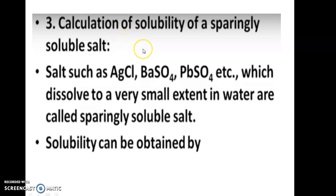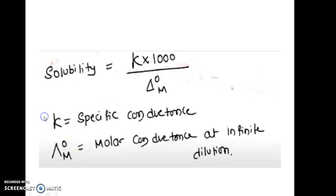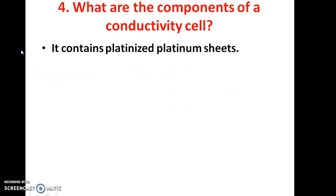The next application: by using Kohlrausch's law, we can find the solubility of sparingly soluble salts — those with very low solubility in water, such as barium sulphate and lead sulphate. Solubility can be determined using the equation: solubility equals specific conductance multiplied by 1000, divided by molar conductance at infinite dilution. If both the specific conductance and the molar conductance at infinite dilution are known, solubility can be calculated.